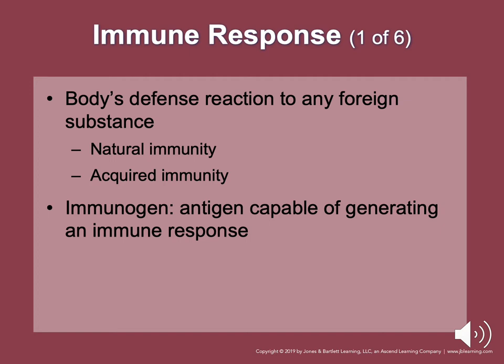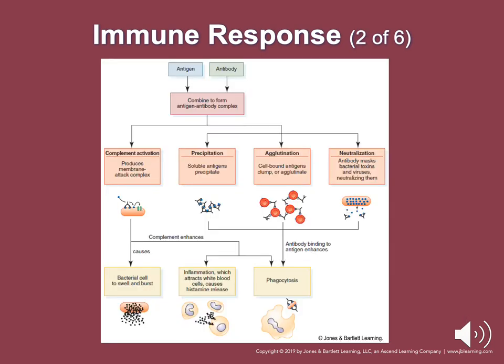Natural immunity is the non-specific cellular or antibody response that operates as the first line of defense against pathogens. Acquired immunity is the receipt of pre-formed antibodies to fight or prevent infection. If you've had an infection before, the body remembers it, creates antibodies, and that's how immunity is acquired. This is shown in an algorithm depicting how the body's immune response initiates and what the end result is.